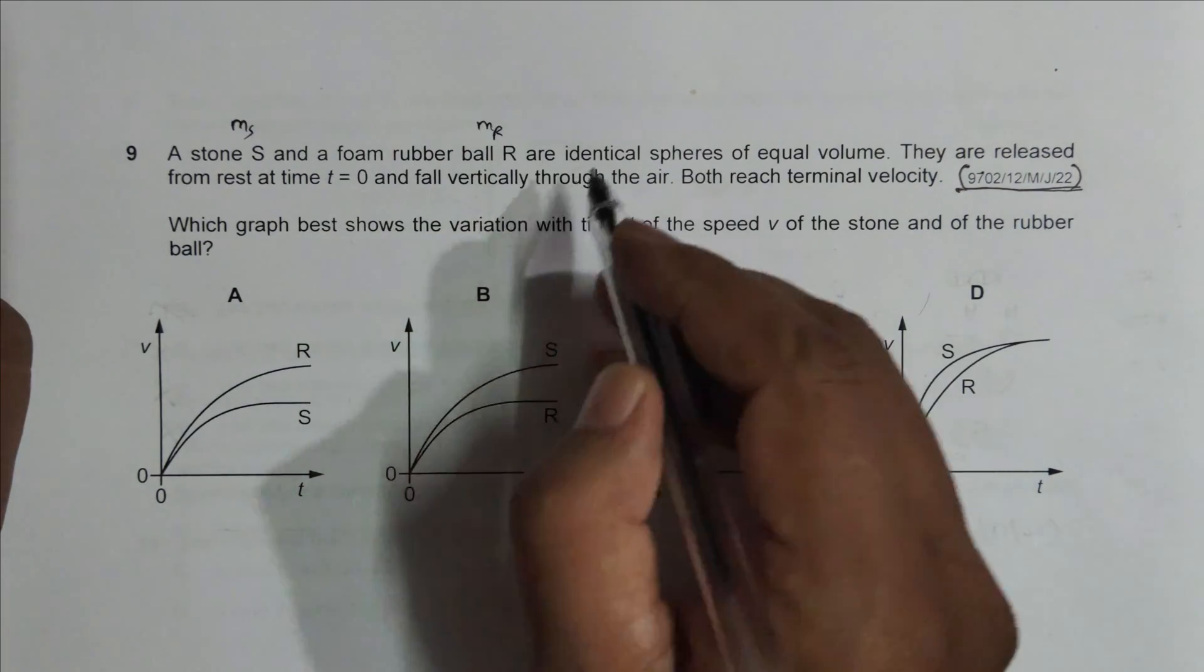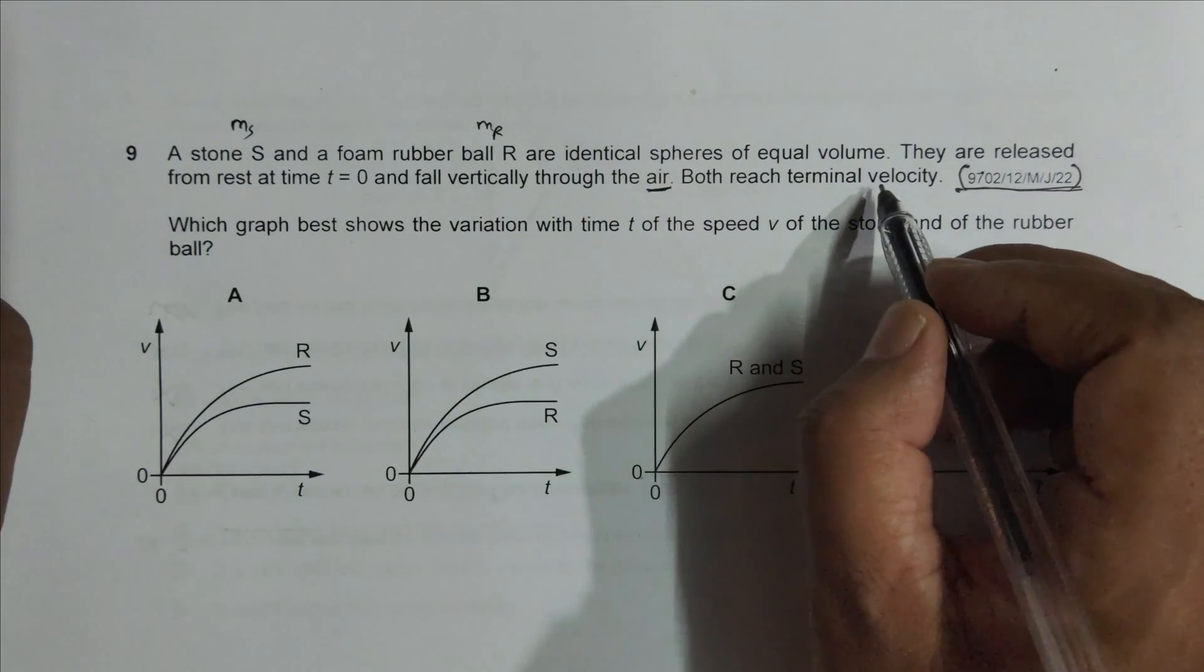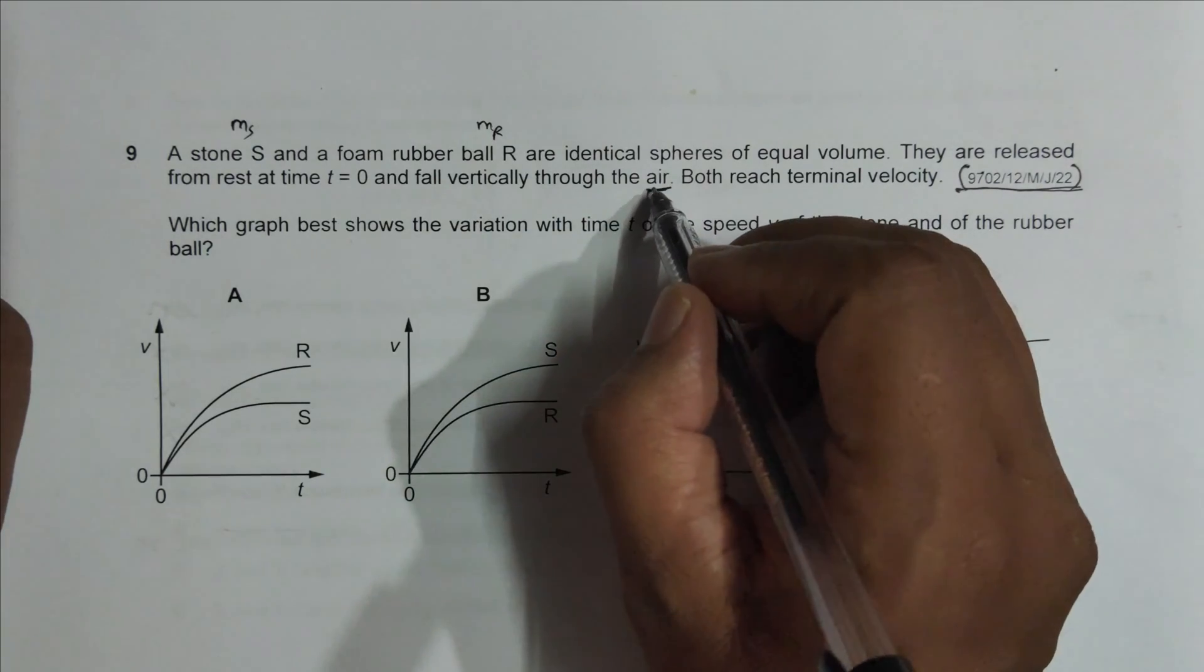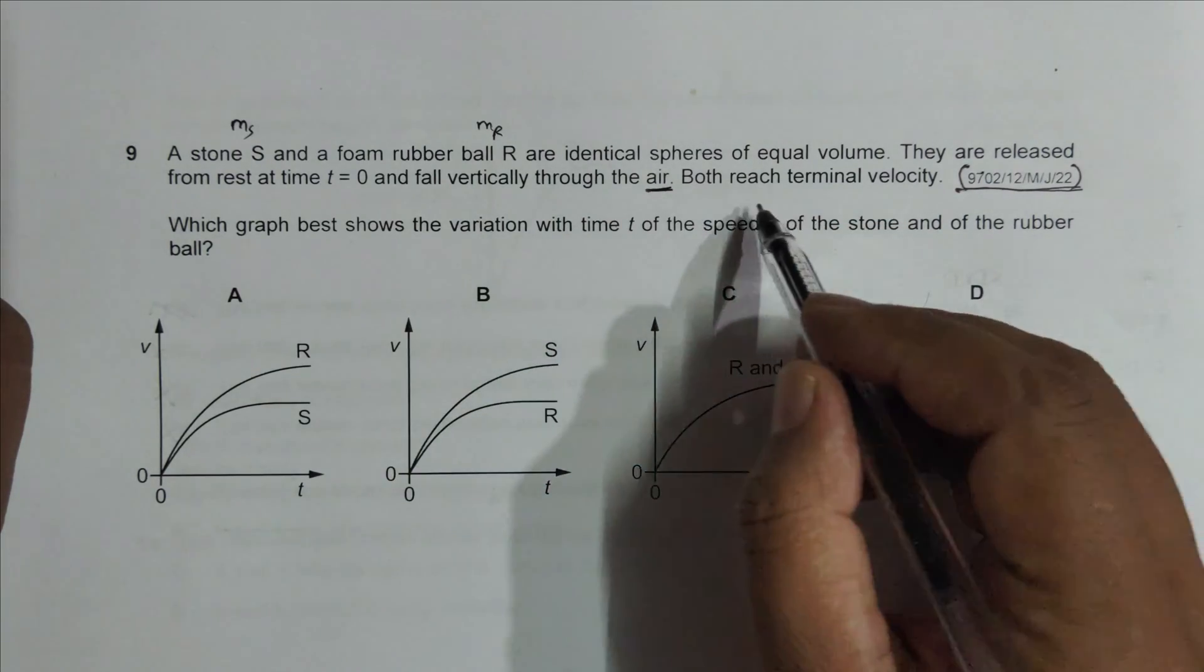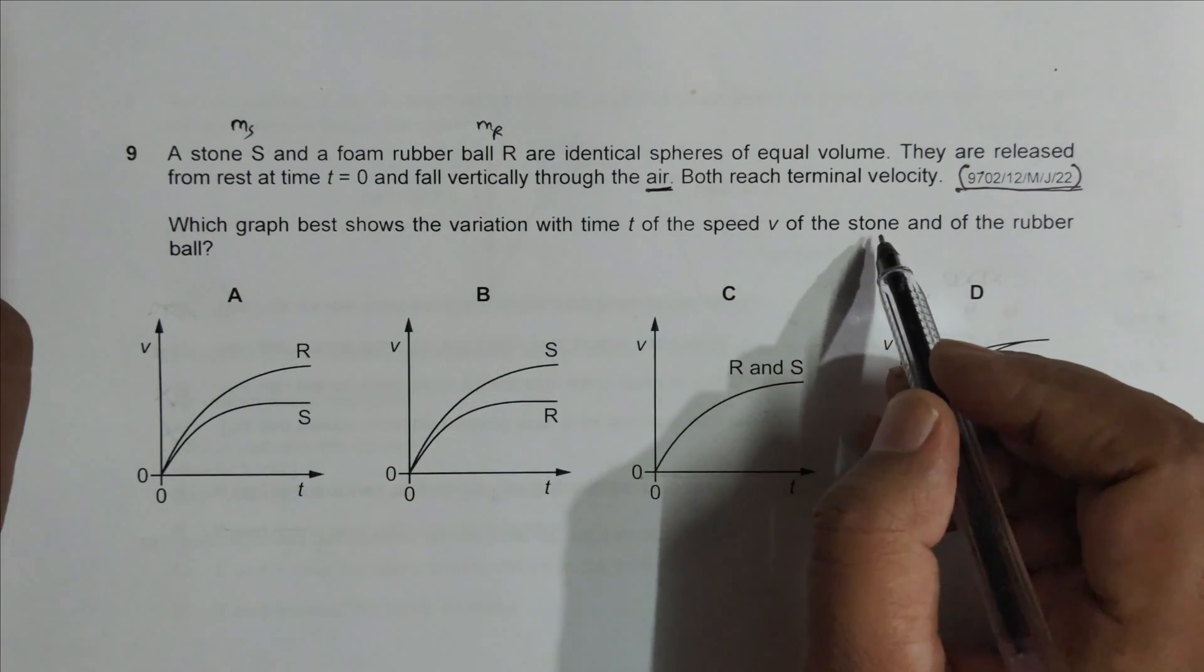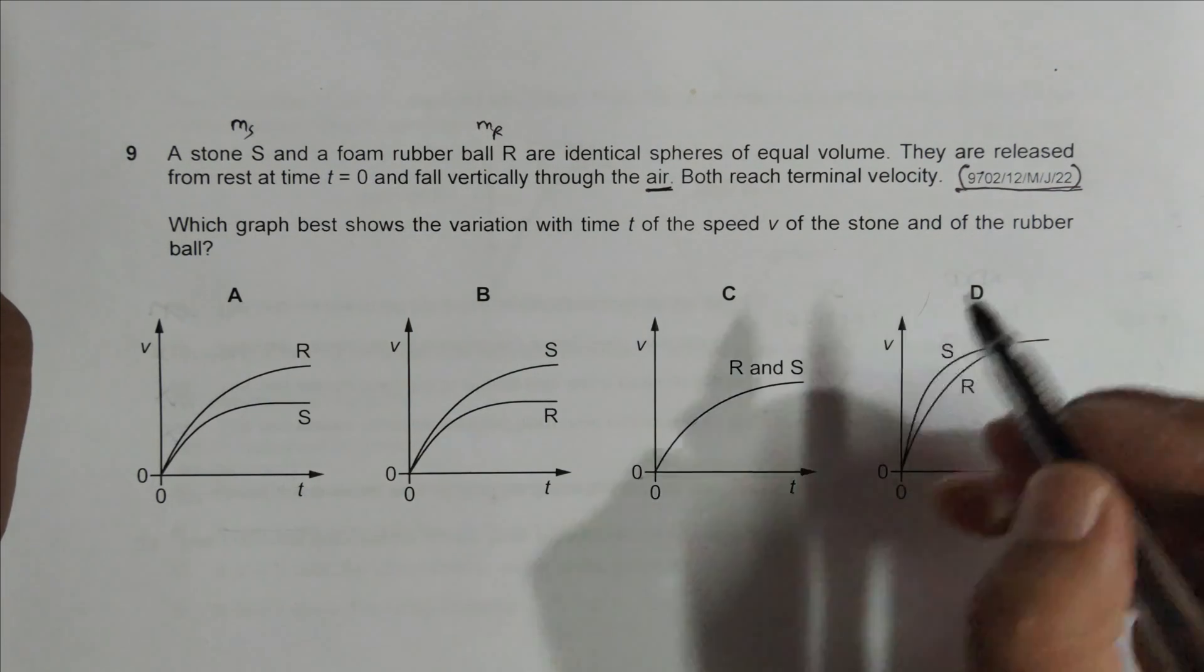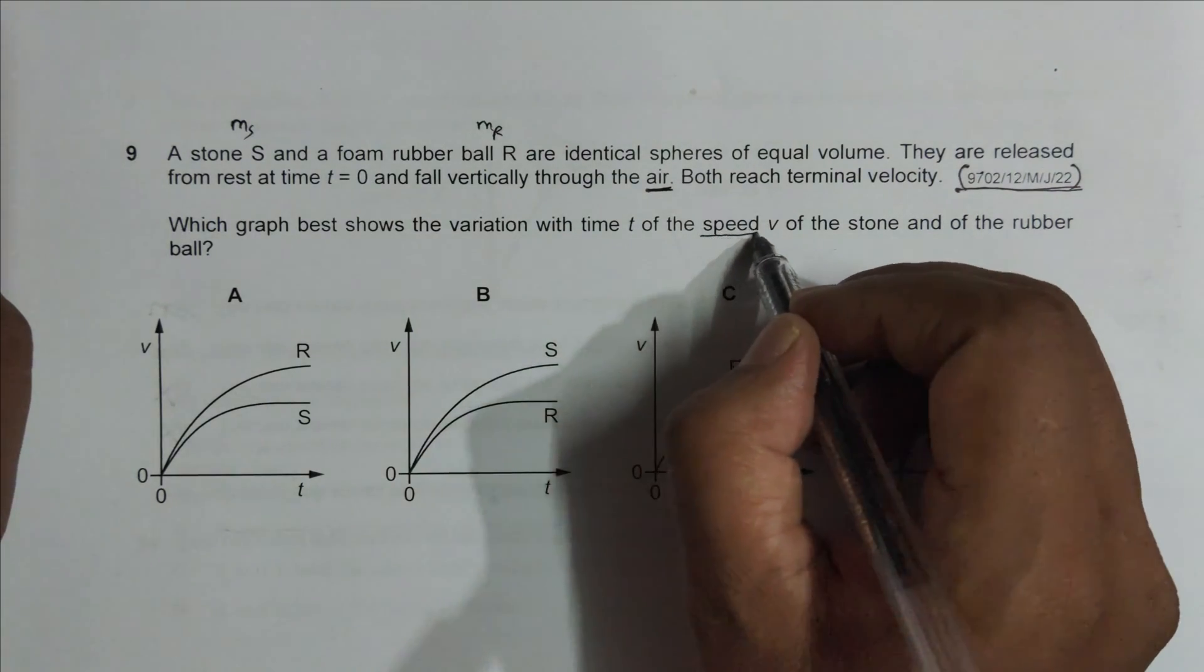Both reach a terminal velocity, which means that we have air resistance acting here. Which graph best shows the variation with time t of the speed v of the stone and of the rubber ball? So we have to compare the variation of speed v of both the balls.